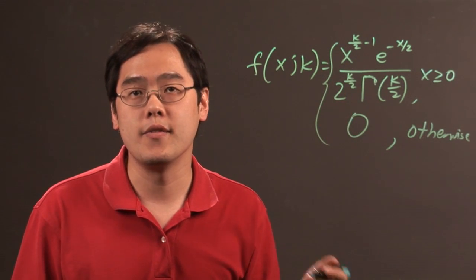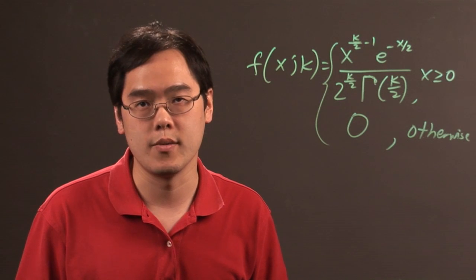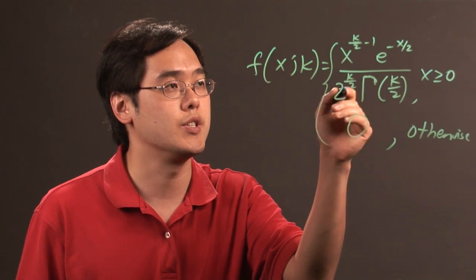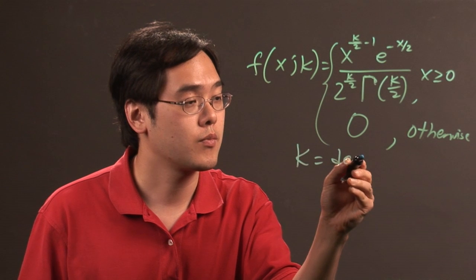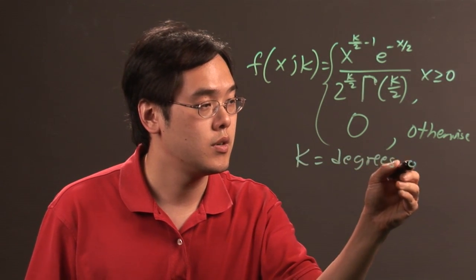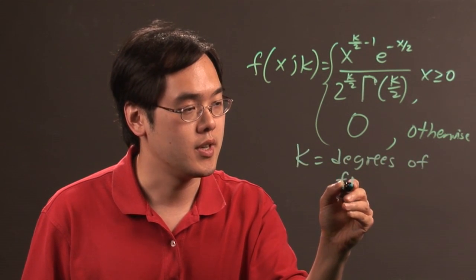Now, like I said before, k is the number of independent, standard, normal random variables. And the chi-square distribution is the sum of the squares of that. But k also stands for the degrees of freedom.